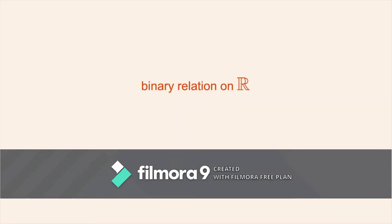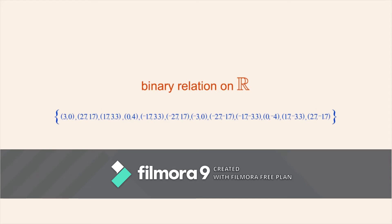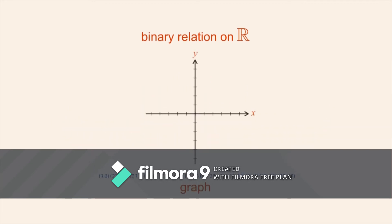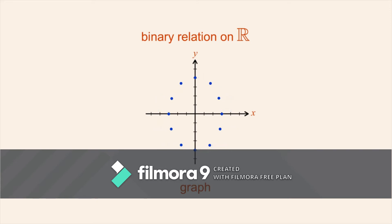To represent a binary relation on R as pairs of real numbers, this set of ordered pairs is sometimes referred to as the graph of the relation. Since Cartesian coordinates can be used to visually represent ordered pairs of real numbers, this is a way to visually represent the graph of a relation. Creating this visual representation is called graphing the relation, and is one of the most powerful methods for understanding mathematical relations.